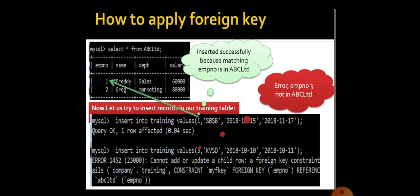Look at the second one here. We are trying to insert the value 3. Actually, the 3 value is not present in ABC Limited. We had entered only 1 and 2, that is Freddy and Greg. There is no value for EMPNO. So the compiler will give an error message like: cannot add or update a child row.